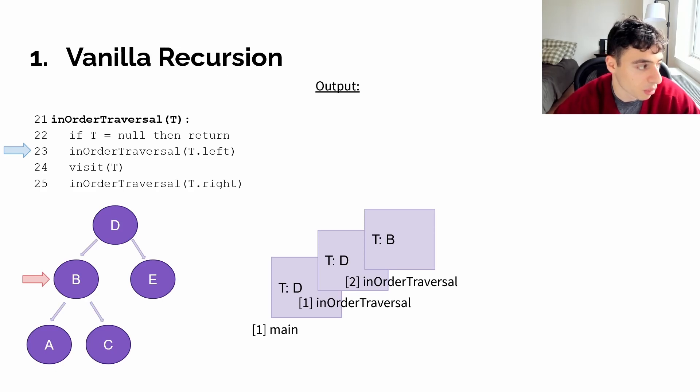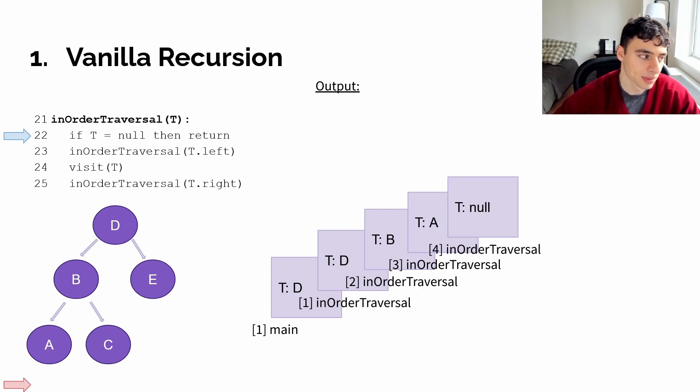The second stack frame will run to line 23, and then it will open a third stack frame, this time for A. A will also run to line 23, and then it will open a fourth stack frame for A's left child, which we know is null. Since it's null, it will only run to line 22 before terminating. Once it terminates, stack frame 4 has popped off the stack, and we return back to A, starting at where we left off, which was line 23.